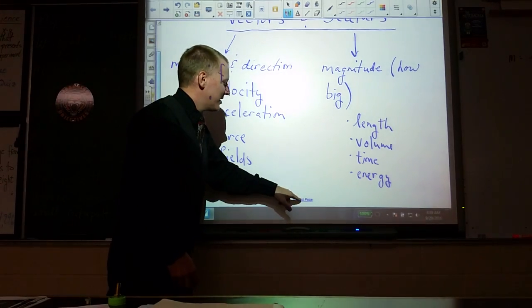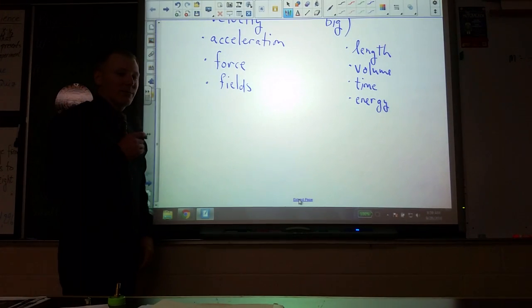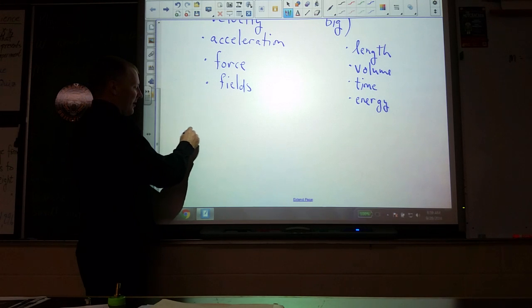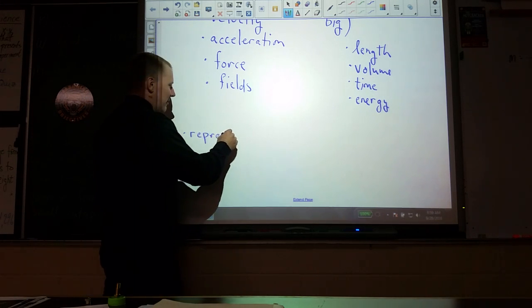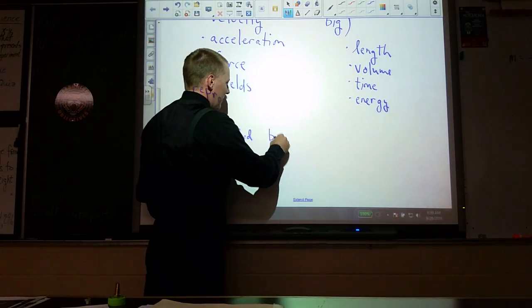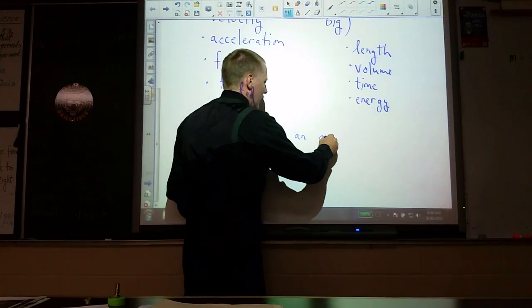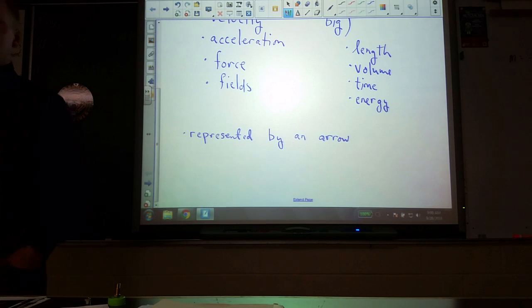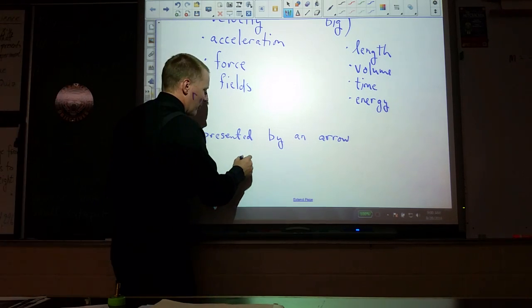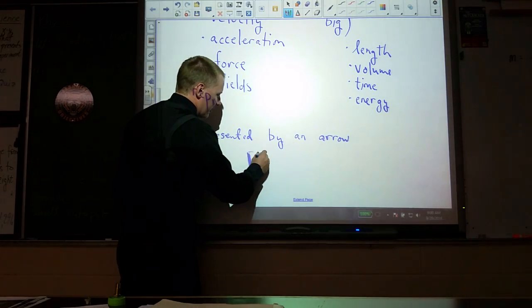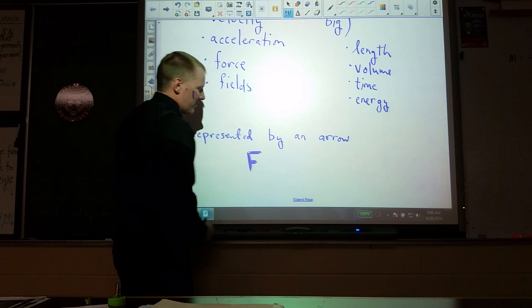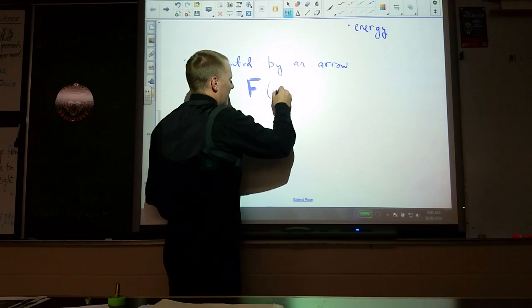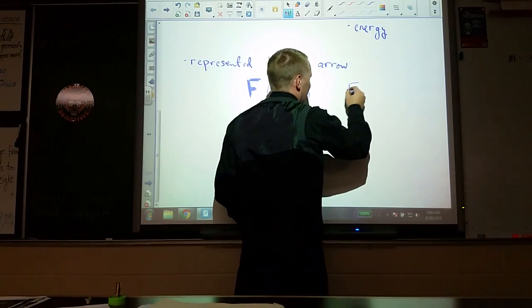It's often represented by an arrow. How will a textbook tell you if something is a vector? It's in bold, right? So we might have force here in bold - that would be a vector, whereas something like this would be a scalar.